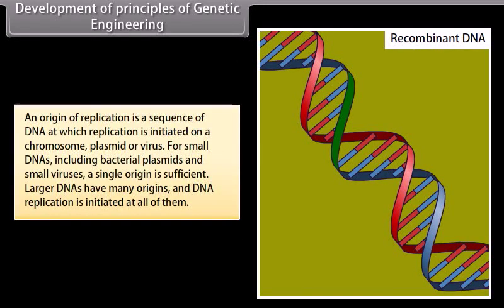An origin of replication is a sequence of DNA at which replication is initiated on a chromosome, plasmid, or virus. For small DNAs, including bacterial plasmids and small viruses, a single origin is sufficient. Larger DNAs have many origins and DNA replication is initiated at all of them.